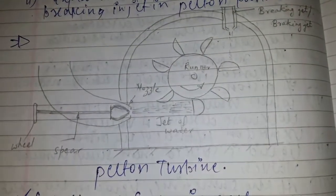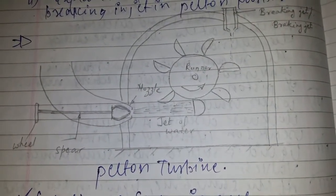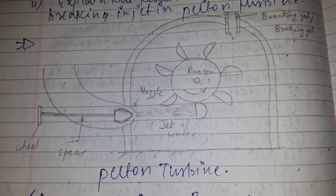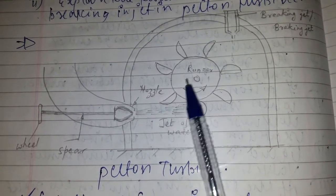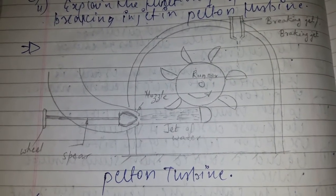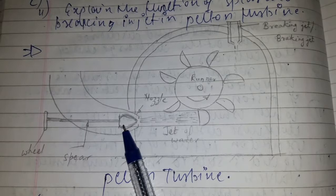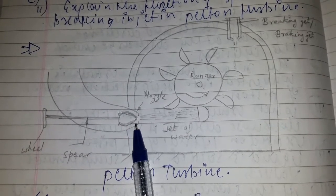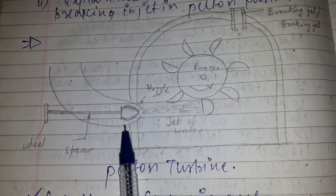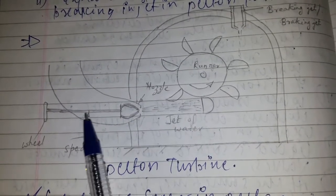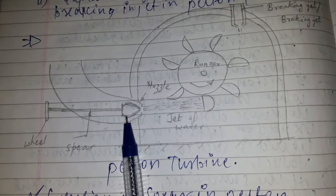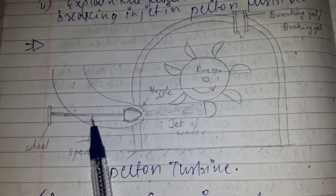Today's topic of discussion is the Pelton turbine. We will discuss the function of the spear in the Pelton turbine and the braking jet. The needle spear is provided in the nozzle to regulate the water flow through the nozzle. It provides smooth flow of water with negligible loss of energy.